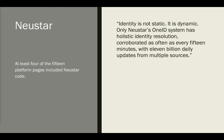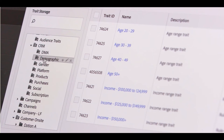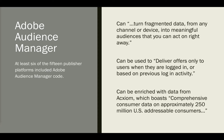This is a screenshot from a marketing video for another tool called Adobe Audience Manager — note that it shows a demographic screen with age and income level, with spaces for gender, purchases, and social data. At least six of the 15 publisher platforms included Adobe Audience Manager code. Adobe claims that Audience Manager can turn fragmented data from any channel or device into meaningful audiences that you can act on right away.